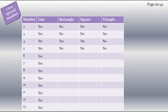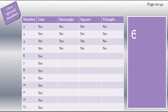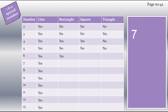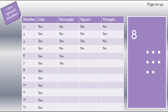Now let's check for rectangle. Let's try to put six dots in the shape of a rectangle — we made a rectangle of 2×3, so let's write yes. Now let's try seven dots in a rectangle, but as seven is an odd number, we can't make a rectangle, so let's write no for seven. For eight, if we put the dots in the form of 2×4, it will make a rectangle, so let's write yes for eight.